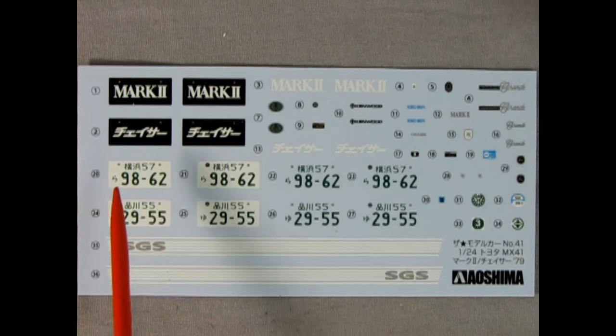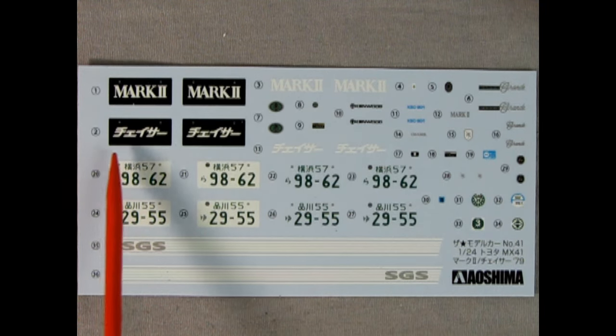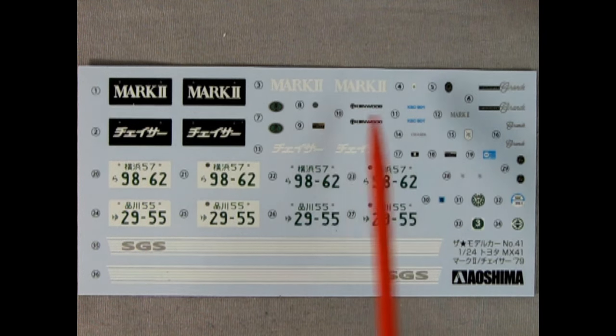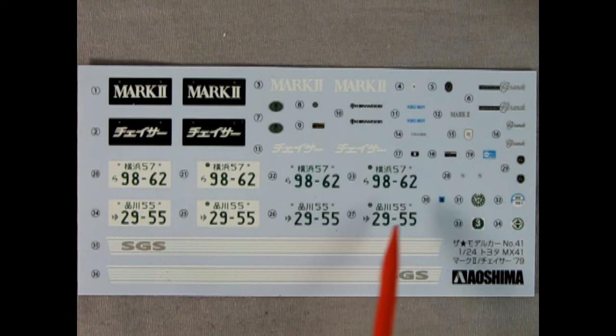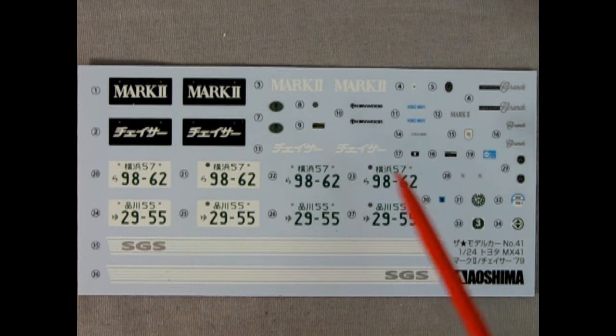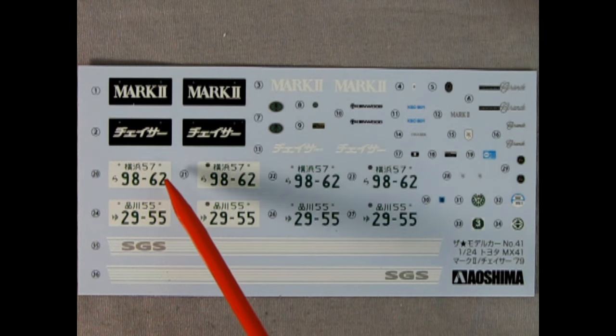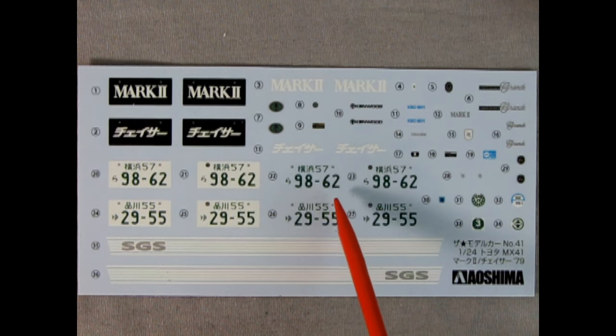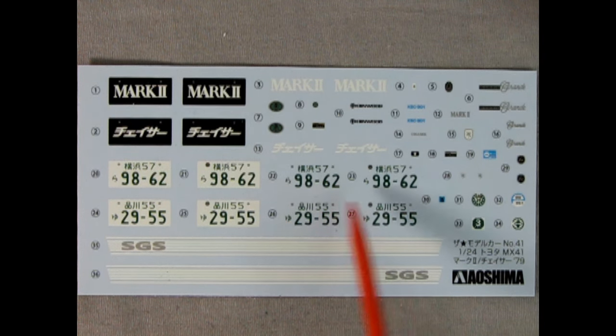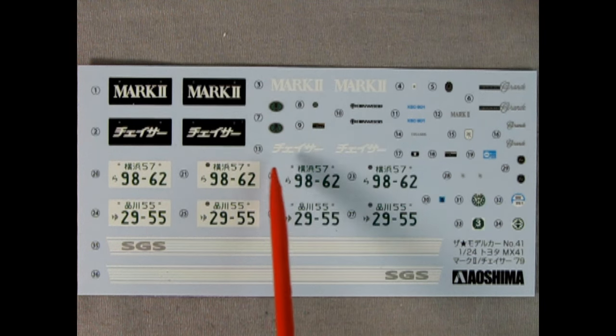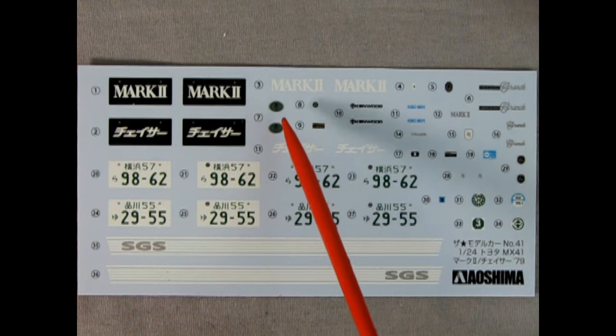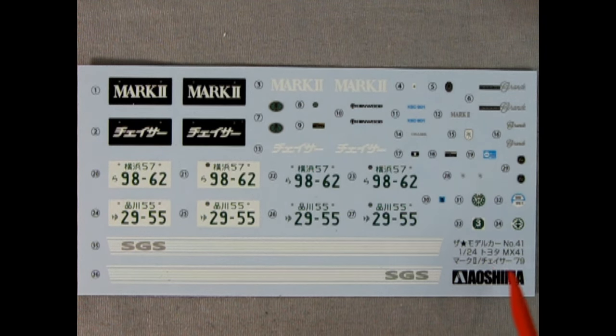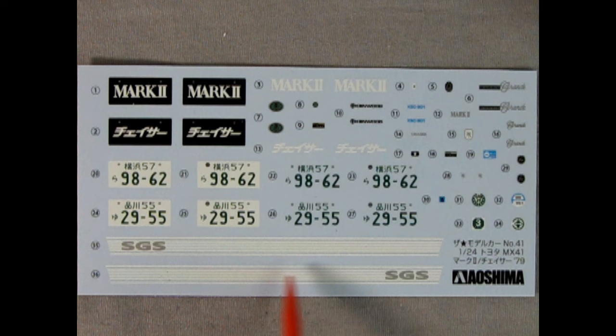Here we have our decal sheet for our Mark II and our Chaser. What's interesting is that it doesn't say Chaser in English. It says it in Japanese. Anyway, so again, what's interesting with Aoshima is they give you all these license plates. I'm not really quite sure the understanding behind it. But most of the license plates I see from Japan are green letters with a white background. But here they also give you green letters and a transparent background. So you could paint your plate yellow or something like that and put these on instead. You also have it for the Mark II and the Chaser, which is really interesting. Then you get all these little decals in here for scripts and whatnot, as well as these stickers, which I believe go on the windows. And then here you get the SGS for the Chaser, that nice decal stripe. So again, really nice looking decals and very colorful.